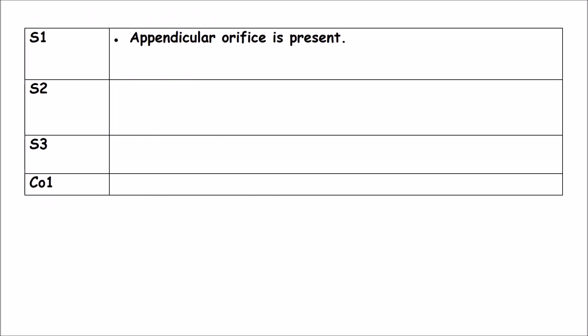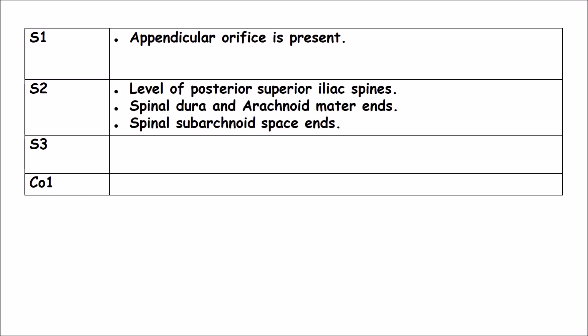Sacral vertebrae: S1 — the appendicular orifice is present. S2 — the level of the posterior superior iliac spines. The spinal dura and arachnoid mater ends. The spinal subarachnoid space ends. S3 — the sigmoid colon ends and the rectum begins.